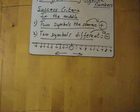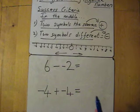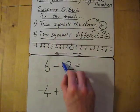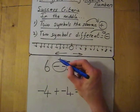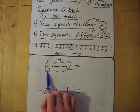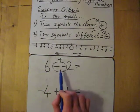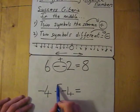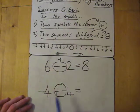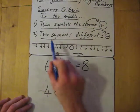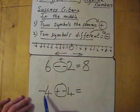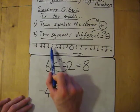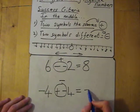Now we'll try a couple of other ones to see the difference. We've got 6 take away negative 2. We look at the two symbols in the middle and they are actually the same, so they combine and turn into a plus. So this is actually 6 plus 2, because the two symbols are the same in the middle — giving us 8. This next one: we're at negative 4, and we look at the two symbols. The two symbols are different, so that means we need to subtract. So this is negative 4 take away another 4, which takes me to negative 8.